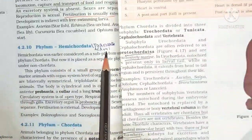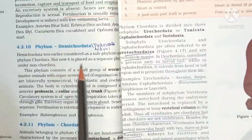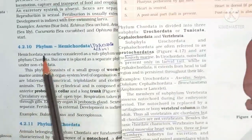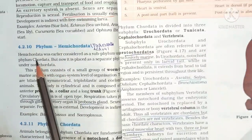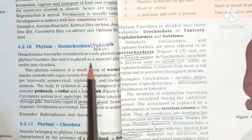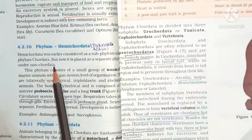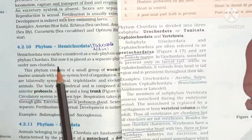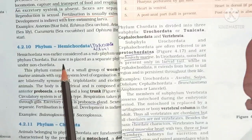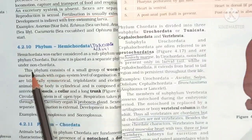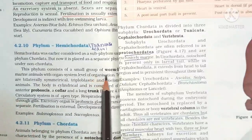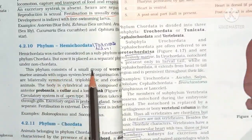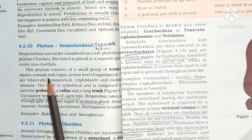Phylum Hemichordata was earlier considered as a subphylum under Phylum Chordata, but now it is placed as a separate phylum under non-Chordata. This phylum consists of a small group of worm-like marine animals.